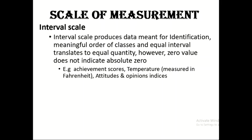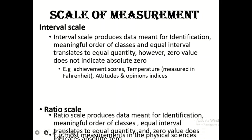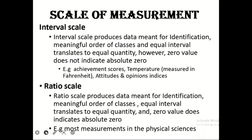The ratio scale of measurement produces data for identification like nominal, meaningful order of classes like ordinal, and equal interval translating to equal quantity like interval. However, it also possesses the quality of having absolute zero — zero does indicate absolute zero. Most measurements in the physical sciences operate at this level of measurement.